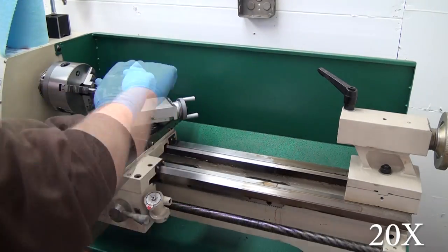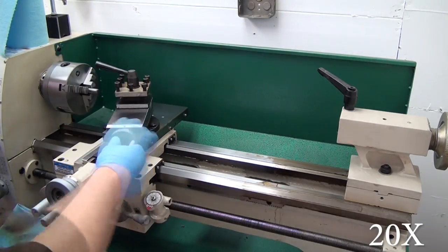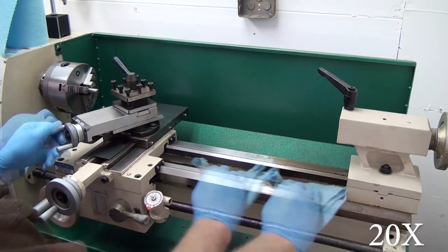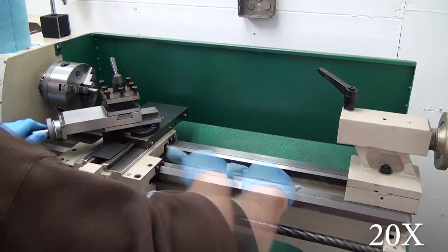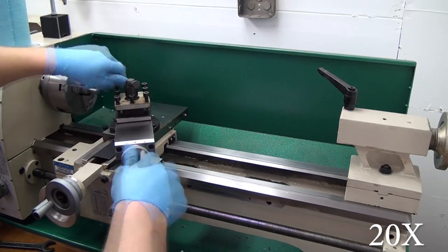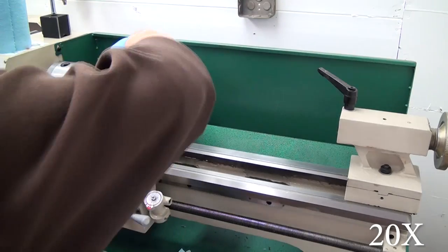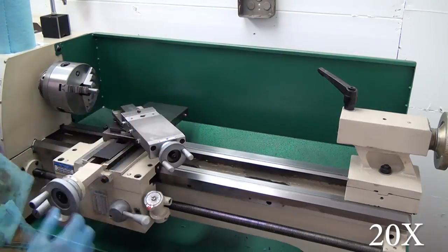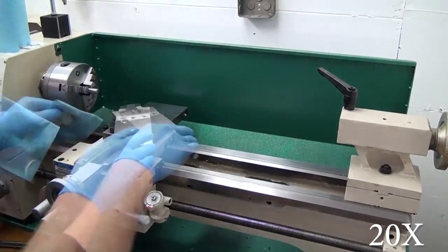All I did was take apart the tool post, and that was just because it was so sticky, I couldn't really spin it. So eventually, I'll probably tear down the carriage and the cross slide and everything and clean it very well and oil it up. But just doing what I did made it work extremely well.